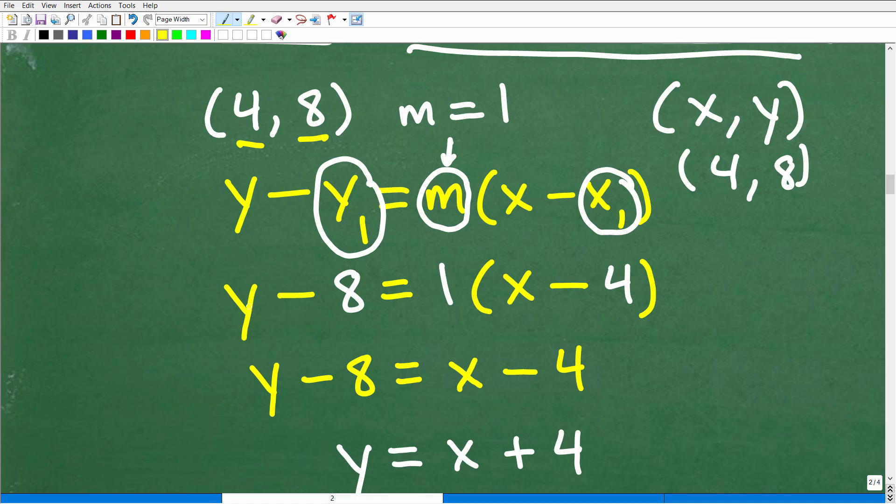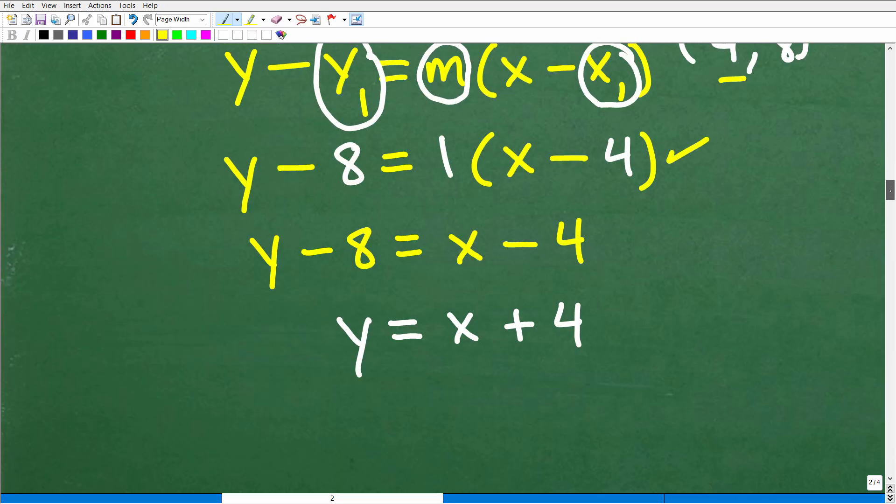So we're gonna have y minus 8 is equal to 1, which, of course, is the slope, times x minus 4, which is, again, our x-coordinate for our point. All right, so at this stage, all we need to do is basically solve for y.